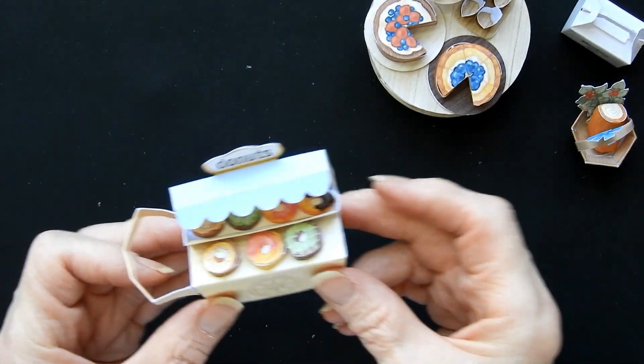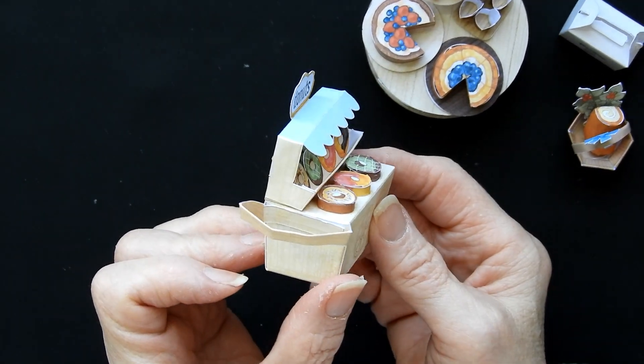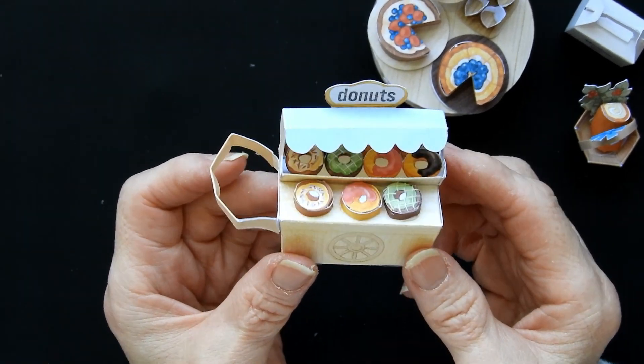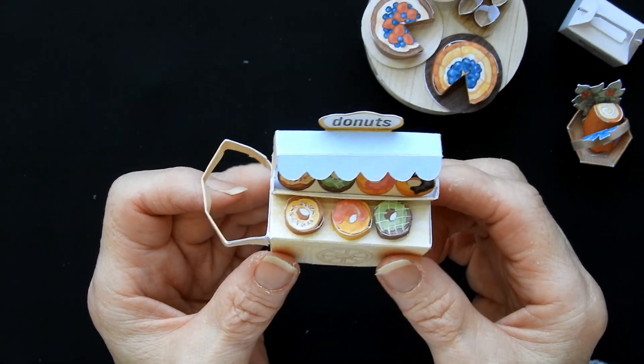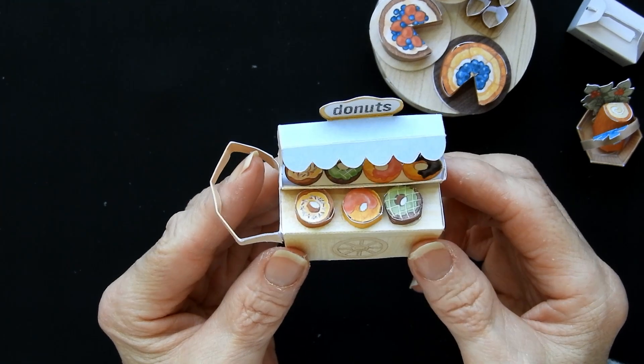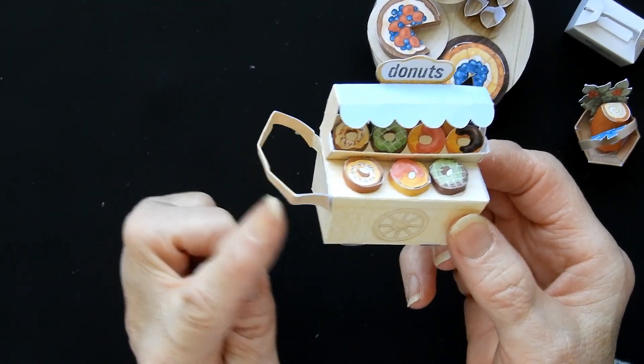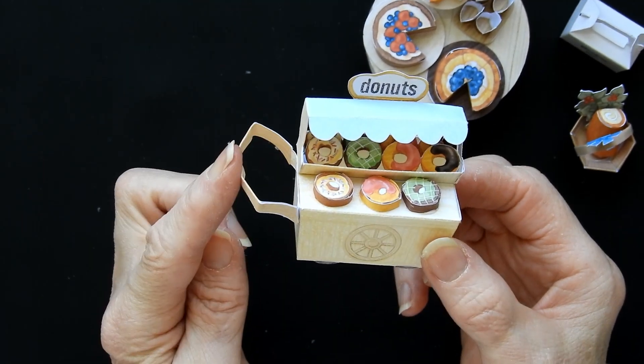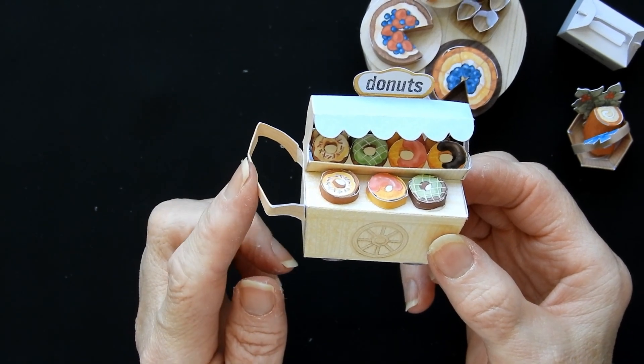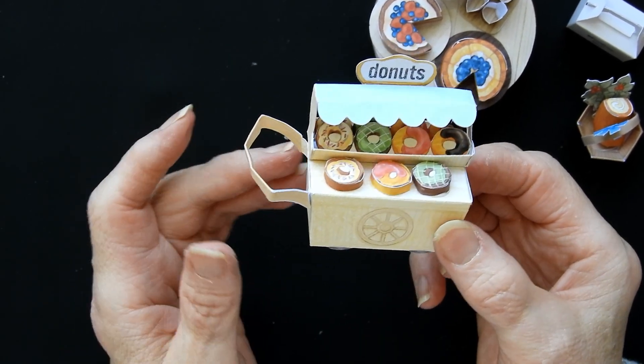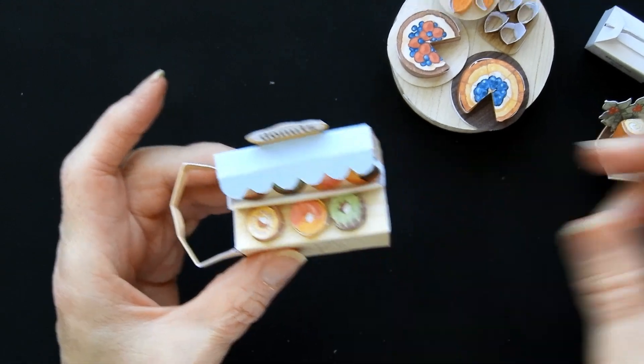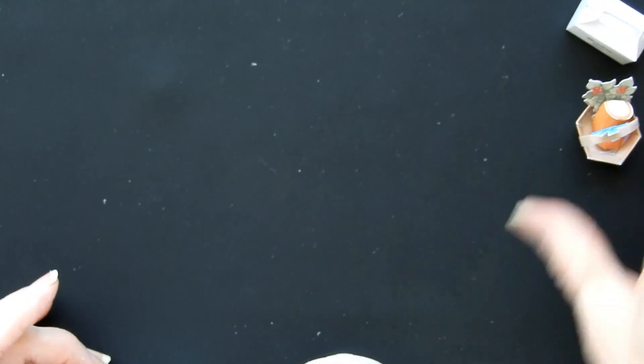And one of my favourite bits is this little donut truck. I think this is so cute. Now none of these bits are very difficult to make. The instructions are pretty clear as to how to do it. The only one that was a bit fiddly was the handle. So just pay attention to how to make that. But yeah, pretty easy going.